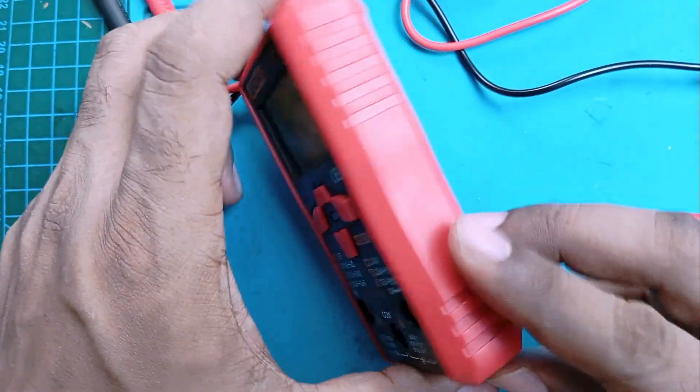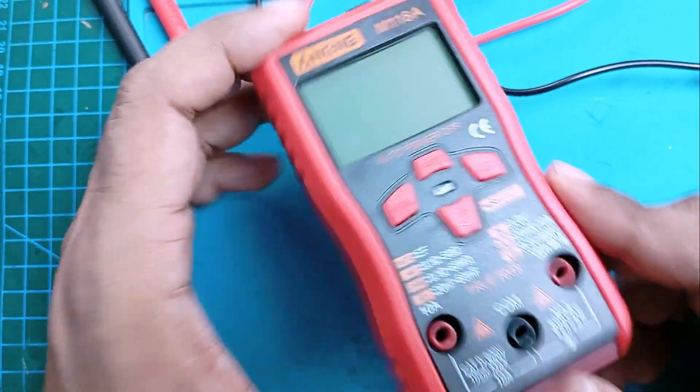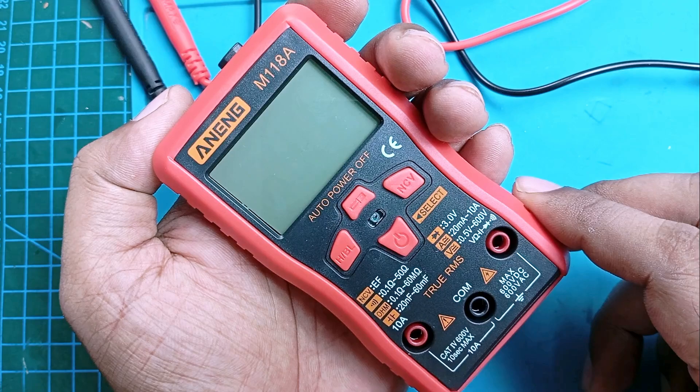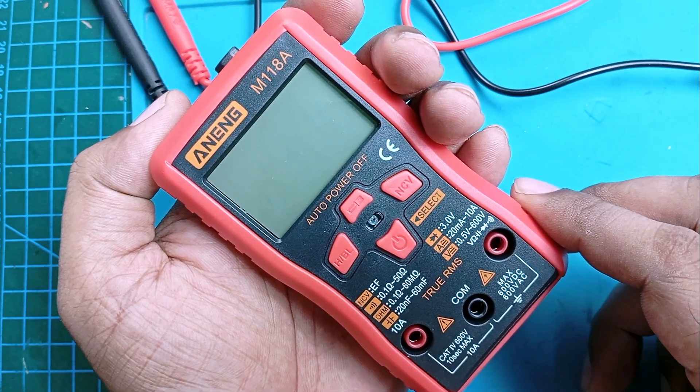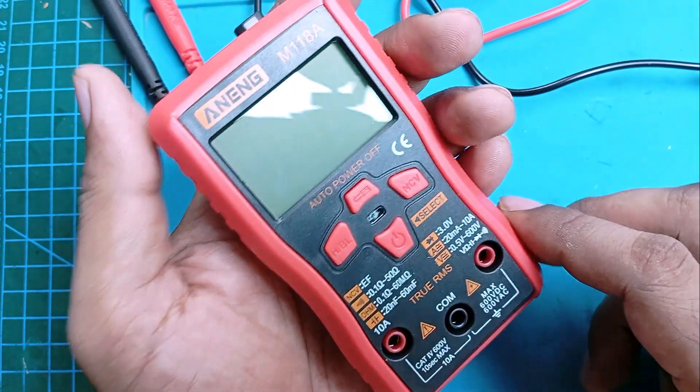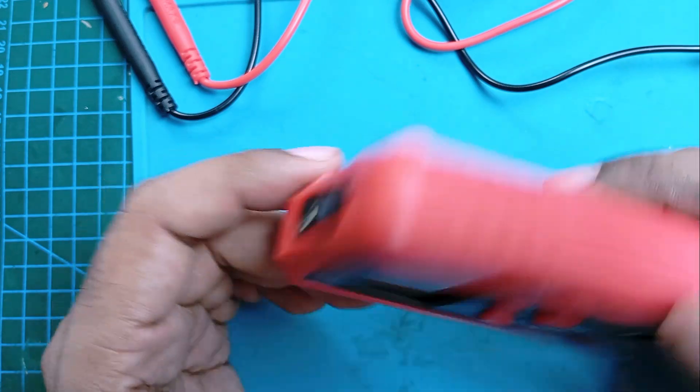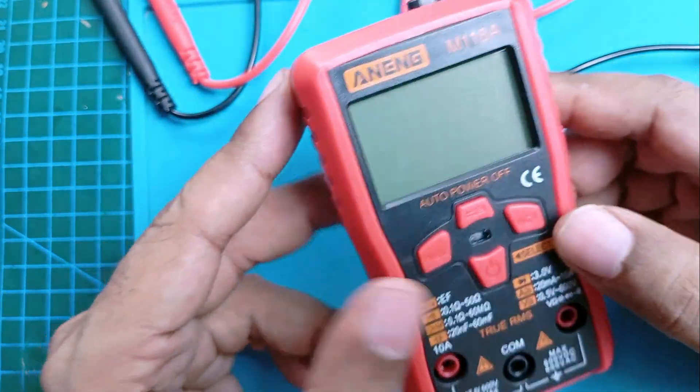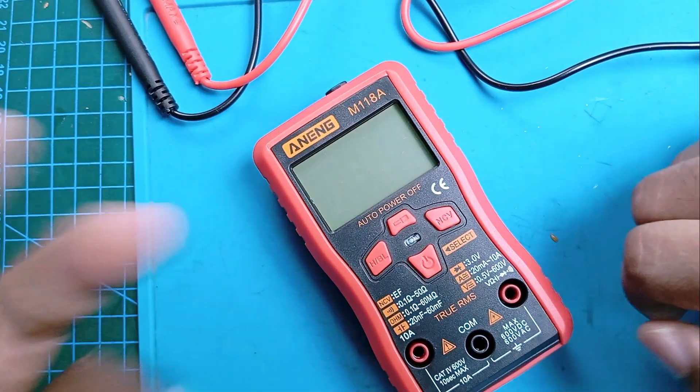Hello, I bought this little multimeter a few days ago. It's small and cute - it's the Anning M118A auto-range multimeter. If you want a smart multimeter but your budget is low, then it can be a good choice for you.